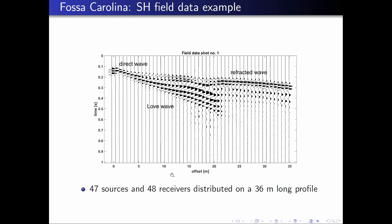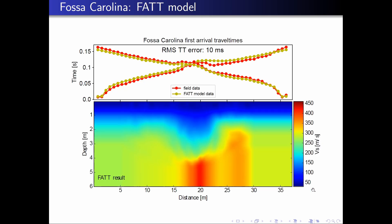In total, the acquisition geometry consists of 47 sources and 48 receivers distributed on a 36-meter long profile. Because the waveform inversion approach is based on a local optimization method, an initial model is required. In this case, we estimated this model by first arrival travel time tomography. The model extends to a depth of about 6 meters with a lateral extension of 36 meters.